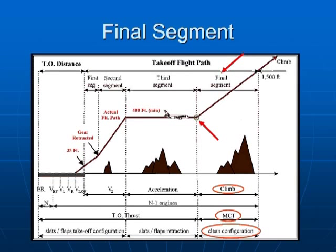The final segment continues to 1,500 feet — that is an FAR requirement. However, APG uses a distance of 30 miles from the departure end of the runway for straight-outs, or for a departure procedure, either a holding pattern where the aircraft can be climbed to a minimum safe altitude, or completion of the departure procedure.